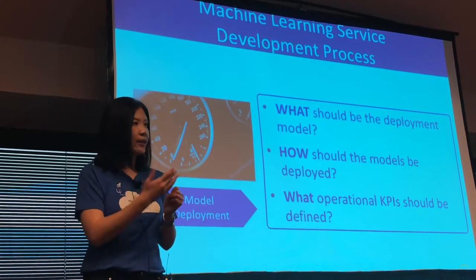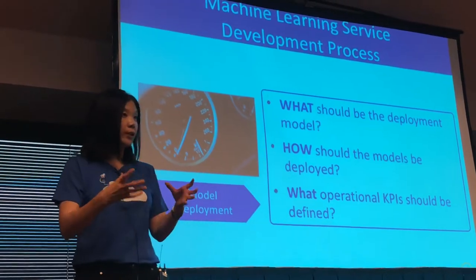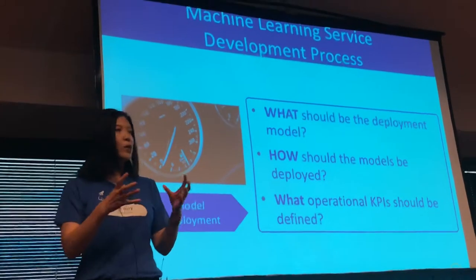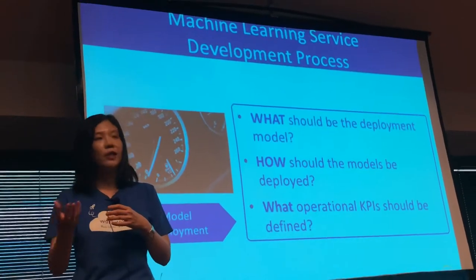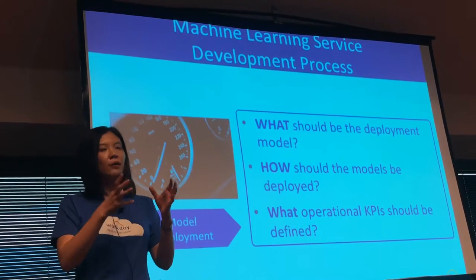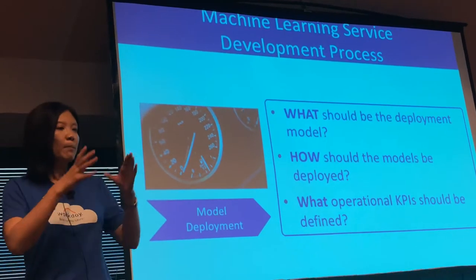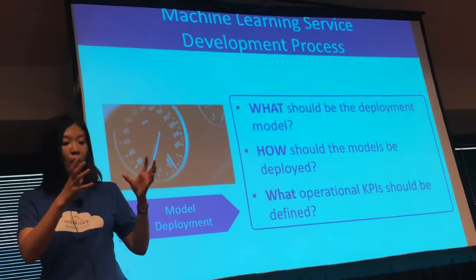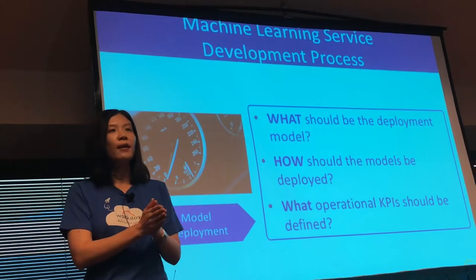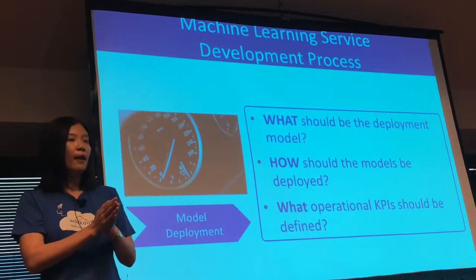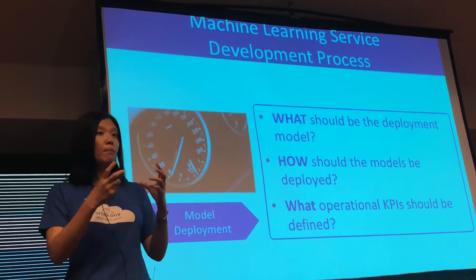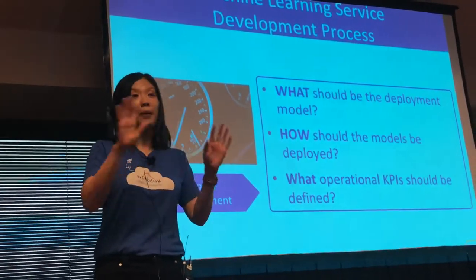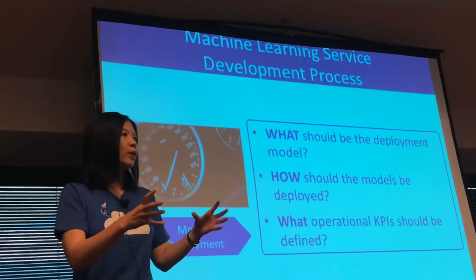For example, we have a Retention Risk solution that classifies and predicts the risk level of employees leaving an organization. We deploy multiple models per tenant because different employee groups — engineers versus salespeople — may have very different reasons for leaving, so the feature sets differ. It's not just one global model per tenant; it might be multiple models within a tenant. So we have to decide: per-tenant or global?